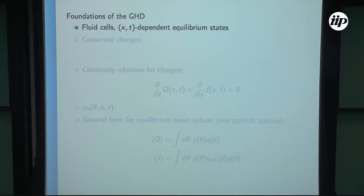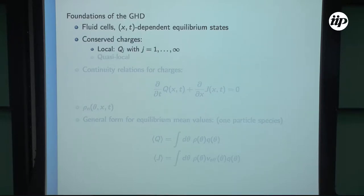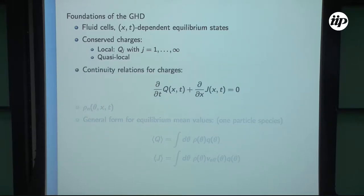What are the foundations of generalized hydrodynamics? As in Benjamin's talk: we have the assumption in hydrodynamics that there are fluid cells in our system with local equilibria — space and time-dependent equilibrium states. In our integrable models we have conserved charges, local conserved charges, and in the XXZ spin chain we also have quasi-local conserved charges. When we want to establish the theory, we necessarily need to deal with continuity relations for the charges. In practice, we talk about Bethe root densities ρ_n(θ, x, t), where n is a particle index.